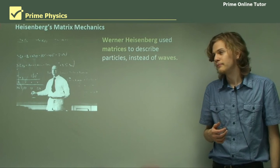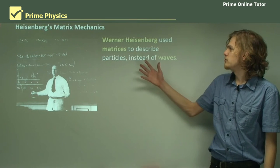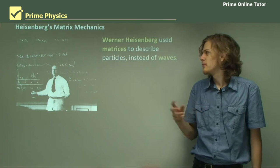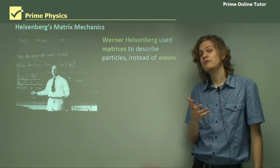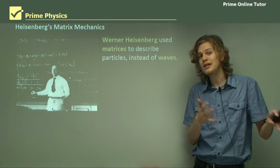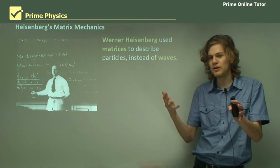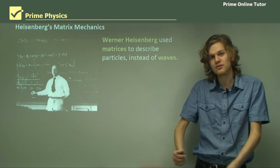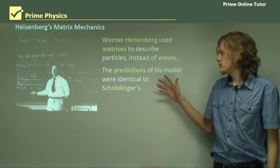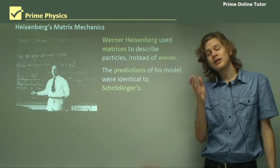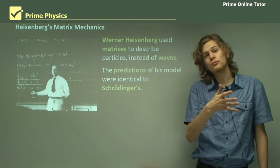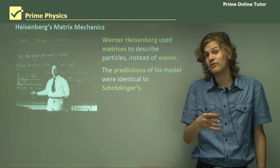On to Werner Heisenberg. Heisenberg used matrices — singular: matrix — to describe particles instead of waves, so all of his equations looked very, very different. Instead of having a wave equation, he had a whole set of matrices. The predictions of his model were completely identical to Schrödinger's model; in fact, the two models were equivalent — they just looked very, very different.